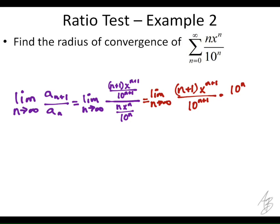Times 10 to the n. And I'm just taking the reciprocal of the denominator here. So 10 to the n over n times x to the n.